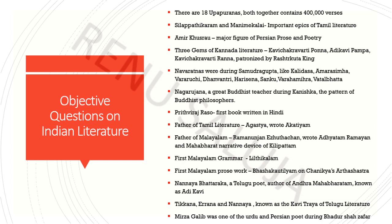Silappatikaram और Manimegalai important epics हैं Tamil literature के। Amir Khusro और Mirza Ghalib बहुत famous figures रहे हैं, poets रहे हैं उस समय के Urdu और Persian के। इन्होंने ghazals, shayaris, nazms लिखी हैं जिनको आज भी हम पढ़ते हैं — they have given rich literature to us. Three gems of Kannada literature — Adikavi Pampa, Kavichakravarti Ponna, and Ranna — आप ऐसे भी याद कर सकते हैं: Pampa, Ponna और Ranna। ये Rashtrakuta kings के time में थे।